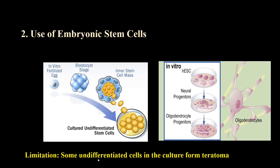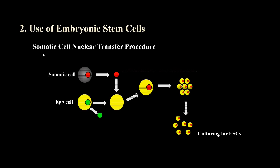However, there is a problem with using embryonic stem cells for therapy. While some embryonic stem cells properly differentiate into the specific cells we want, within an embryonic stem cell colony we also notice that some undifferentiated cells form teratomas, which are a kind of benign tumor. Scientists think these teratomas form due to immunologic rejection, because the embryonic stem cells are obtained from another person's embryo.